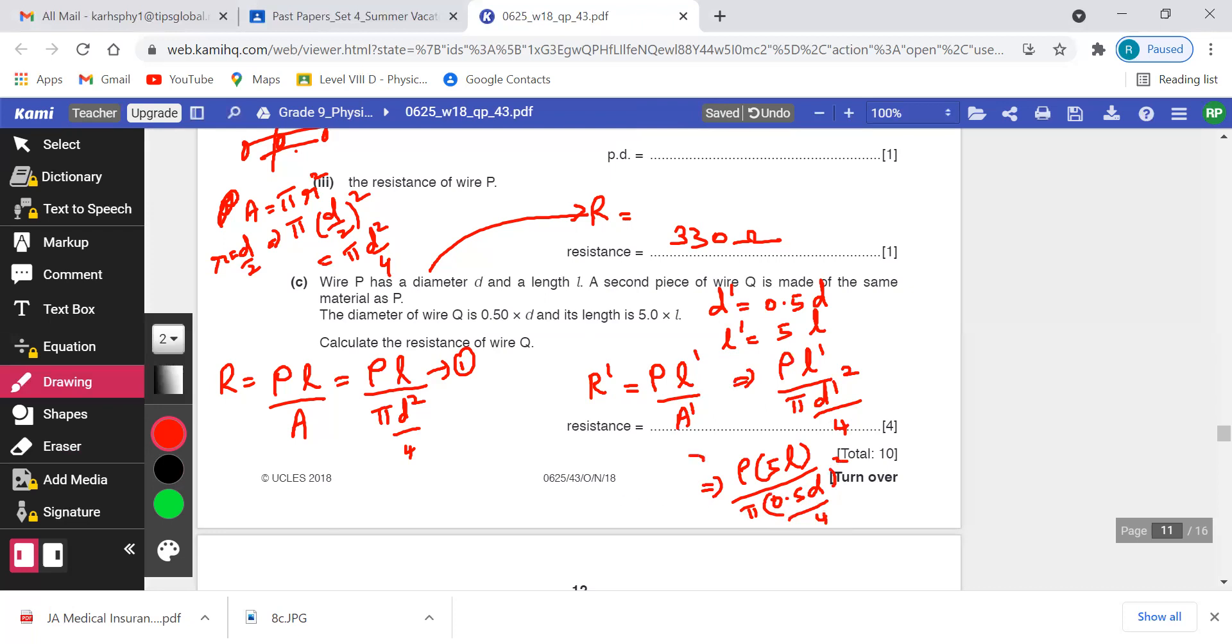I can write this as ρ—I'll take it to the front—5ρL. 0.5 squared is 0.25D². 0.25, take it to the front, and πD²/4. So 0.5 squared is 0.25 by πD²/4. So that 0.5 take it to the front and 5 also I keep it to the front.